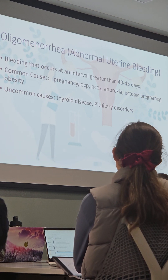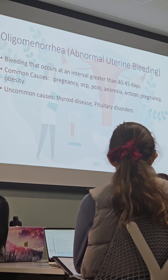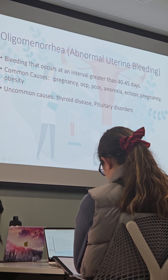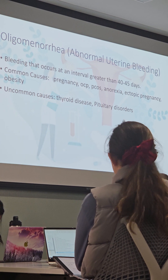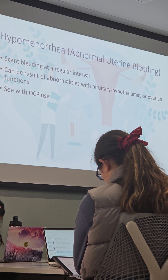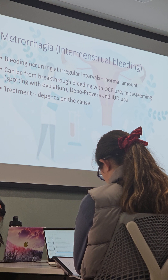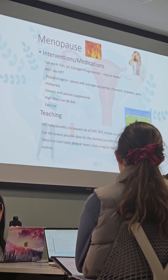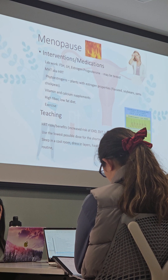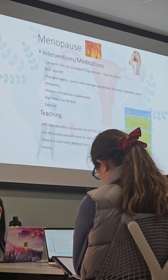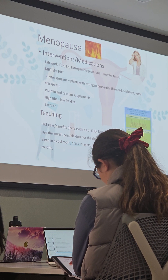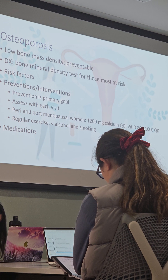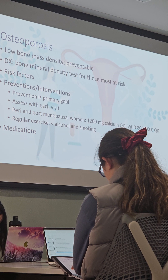This chapter has 12 questions, so it's a heavily weighted chapter. Know the differences between abnormal and normal bleeding patterns and the causes. Teaching around menopause is important, and know the signs and symptoms of osteoporosis and the teaching and interventions we would do.